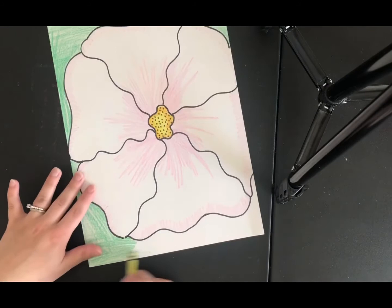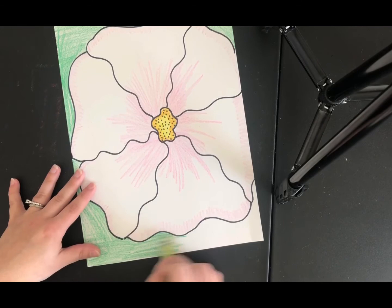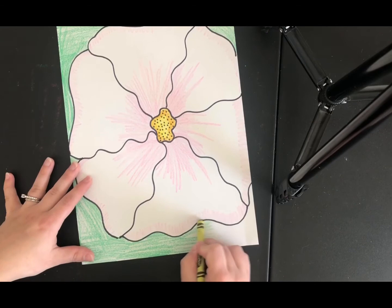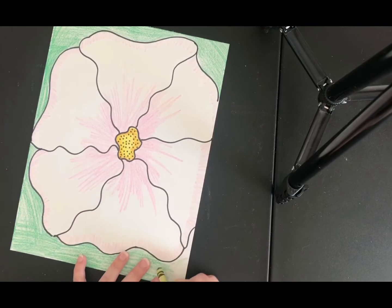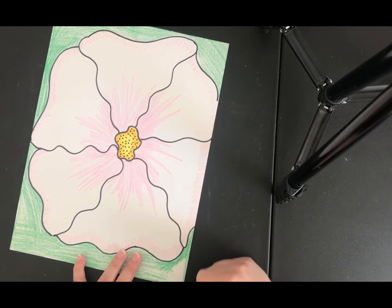I'm actually going to turn my paper so that I can get this side colored. And that might be actually something you want to do when you color your petals is turn your paper so that you can make it easier for you to change directions.